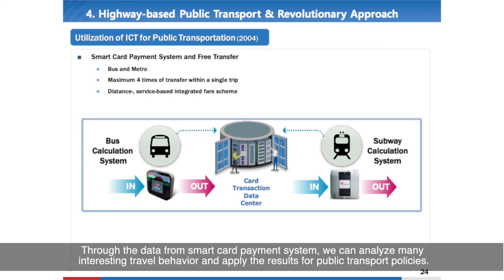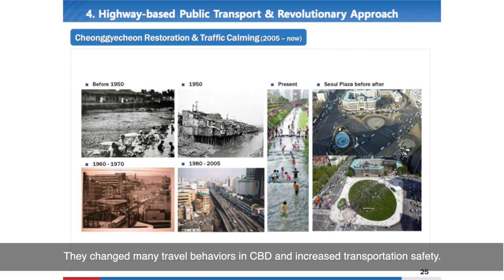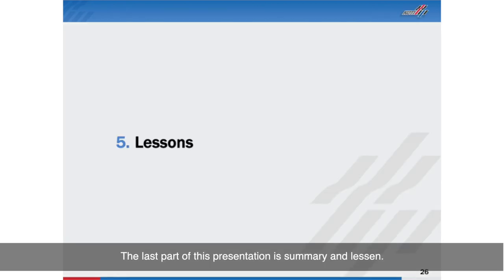Through data from the smart card payment system, many interesting travel behaviors can be analyzed and results applied to public transport policies. One of the major changes in Seoul's transportation revolution is the Cheonggyecheon restoration and traffic calming since 2005, which changed many travel behaviors in the Central Business District and increased transportation safety.